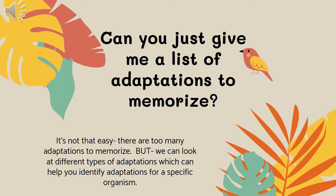I've had kids in the past ask, 'Can you just give me a list of adaptations to memorize?' And it's not actually that easy. There are too many different adaptations. Each animal has adaptations specific to its environment, and then animals within that environment also have their own specific adaptations for whatever their role is in that ecosystem. So there are too many to memorize, but we can give you a general idea of what we're looking for — some common ones — and that's what we're going to be looking at in this slideshow.